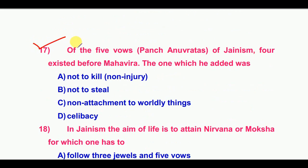Seventeenth question: Of the five vows, the Pancha Anuvratas of Jainism, four existed before Mahavira. The one which he added was celibacy.